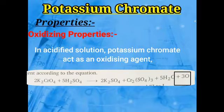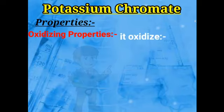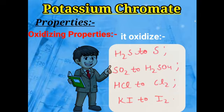In this reaction, potassium chromate reacts with H₂SO₄ to form potassium sulfate, chromium sulfate, water, and three molecules of nascent oxygen. This nascent oxygen acts as the oxidizing agent: it oxidizes H₂S gas to sulfur, SO₂ gas to H₂SO₄, HCl to Cl₂ molecules, and potassium iodide to I₂.